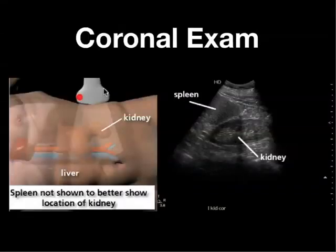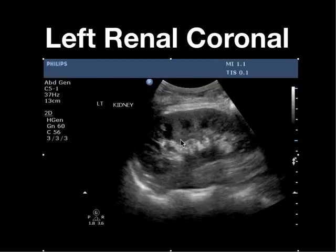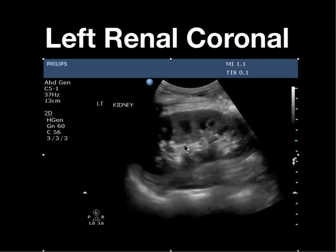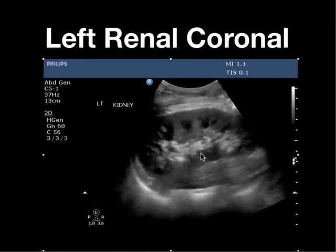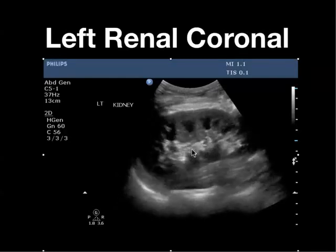Here's the left kidney in the coronal plane — indicator up towards the head, shooting lateral to medial. You can do this with the patient supine or in the right lateral decubitus position. You can see the inferior tip of the spleen, the kidney, the surrounding renal parenchyma, and the hyperechoic renal pelvis. Sweeping through into the area where the opening of the renal pelvis is gives the best visualization of hydronephrosis.